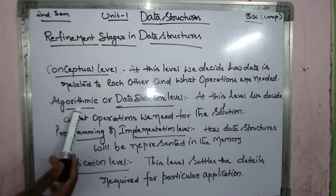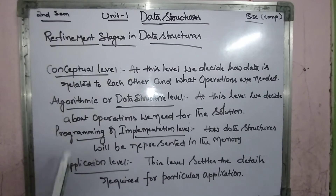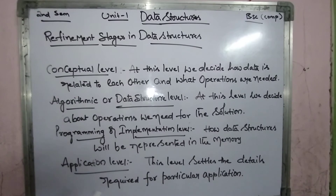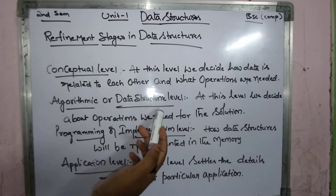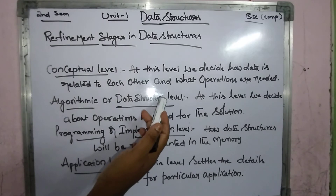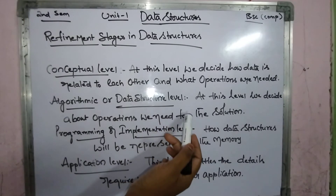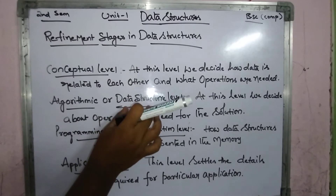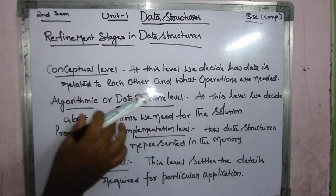The next one is the algorithmic or data structure level. At this level, we decide about the operations we need for the solution. We decide what kind of data structure we need to solve the problem — what type of data structure is required for the problem solution.